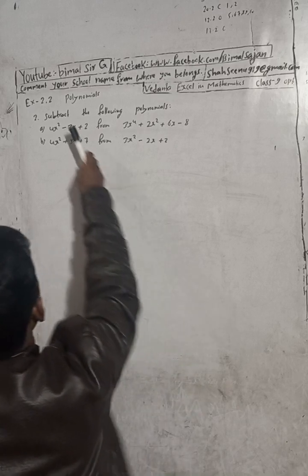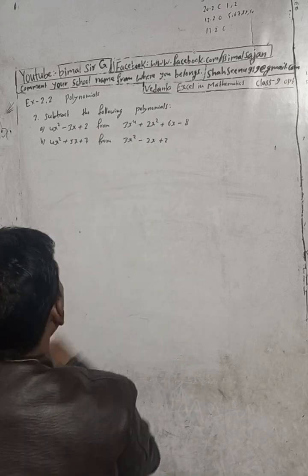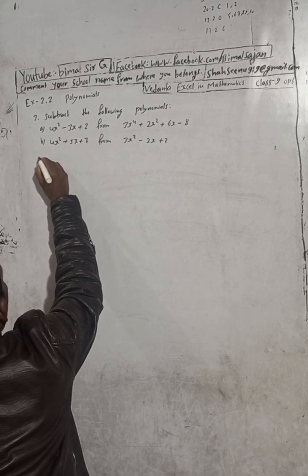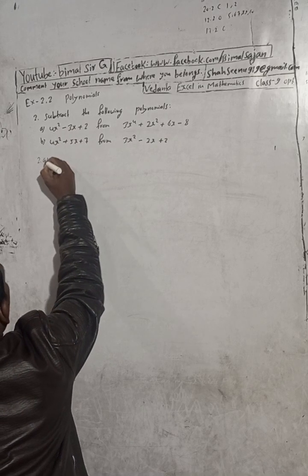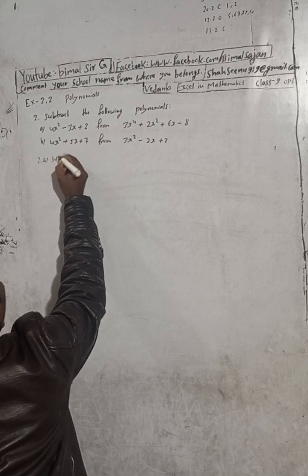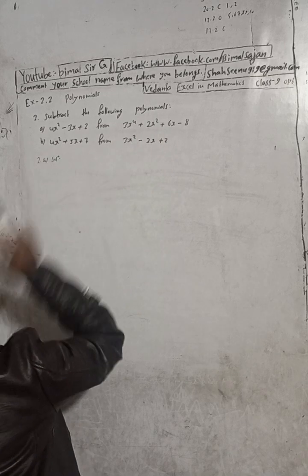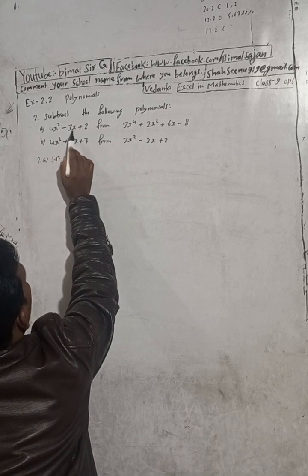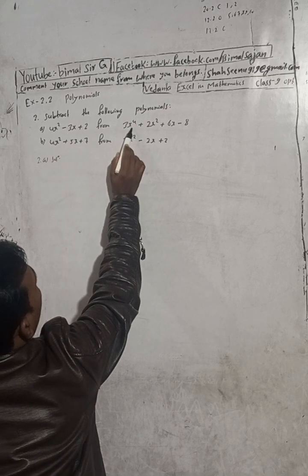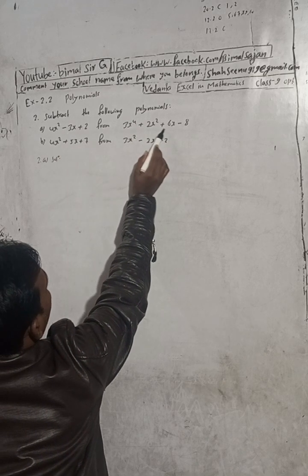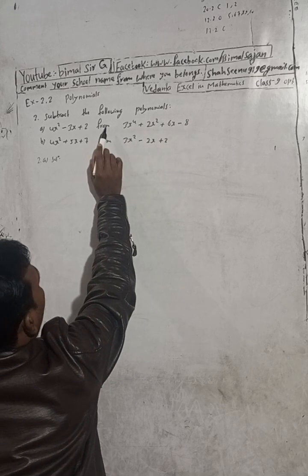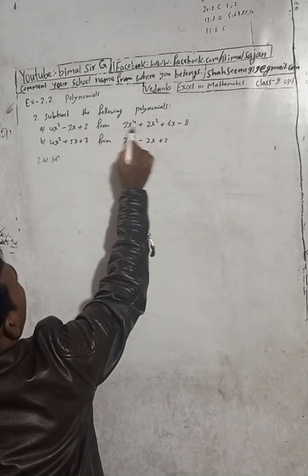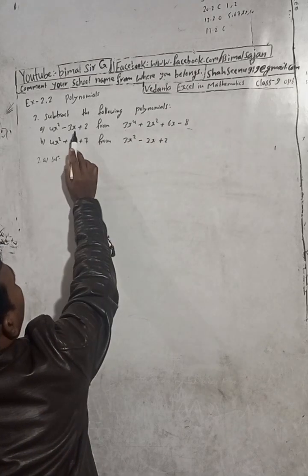Now here the question is: subtract the following polynomials. Part A: subtract 4x squared minus 3x plus 2 from 3x to the power 4 plus 2x squared plus 6x minus 8. What you have to consider here is the 'from' part.